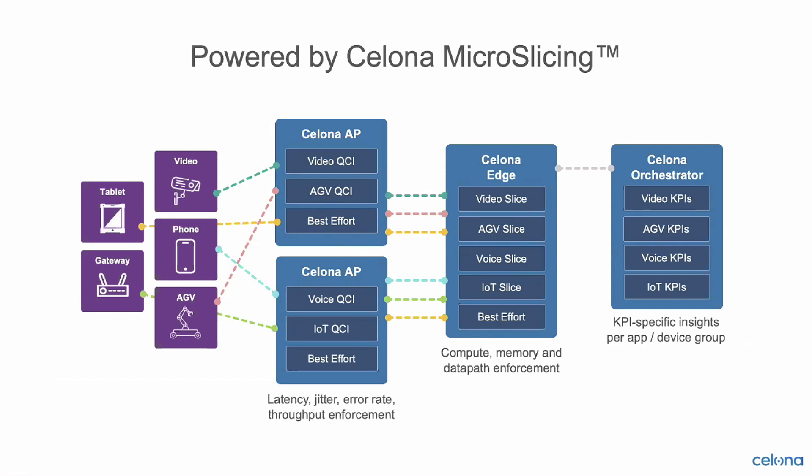With our microslicing feature, we enable end-to-end QoS for different applications running in the network. Our customers can aim for strict SLAs on the radio resources, they can have dedicated network resources on the edge, and they can have KPI-level monitoring at the orchestrator. We have a very granular approach to the 5G network slicing concept, and our end-to-end solution creates microslices for different applications. Each individual app on a specific device or device group can be assigned a guaranteed SLA in terms of latency, jitter, packet error rate, and throughput.